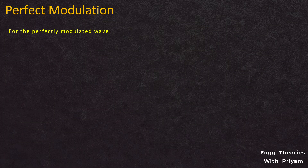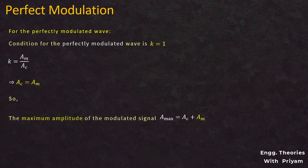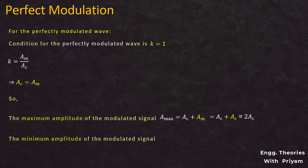For the perfect modulation condition, k = 1. From k = am / ac, we get ac = am. The maximum amplitude is A_max = ac + am = 2·ac, and the minimum amplitude is A_min = ac − am = ac − ac = 0, where ac is the amplitude of the carrier signal.